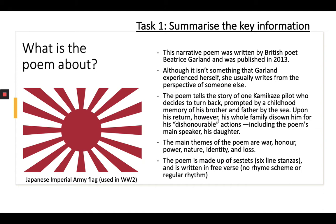Throughout the poem you'll see references to the main themes, which are war, honour, power, nature, identity, and loss — those crop up quite a lot and you'll start to notice them as we read it. It's also useful to remember that the poem is made up of sestets, which are six-line stanzas, but the rest is written in free verse so there's no regular rhyme scheme or rhythm. It's very flowing, which makes it sound like a story. On the left I've put a picture of the Japanese imperial army flag, which was used in World War II — they wore headbands with it and had flags on the planes. This flag is called something like 'rising sunrise' and there are a lot of references to sunrise and flags in this poem.